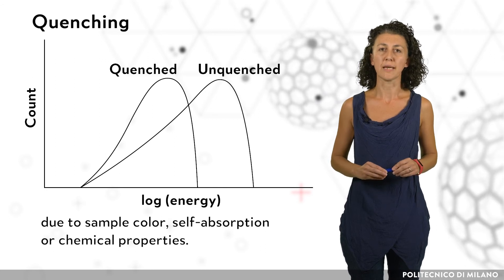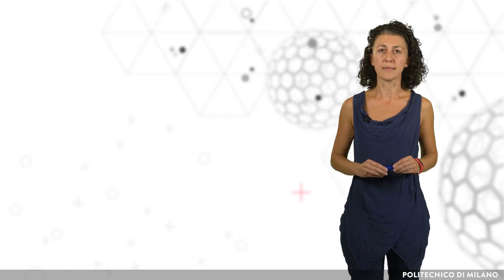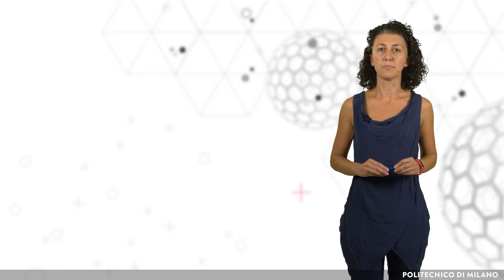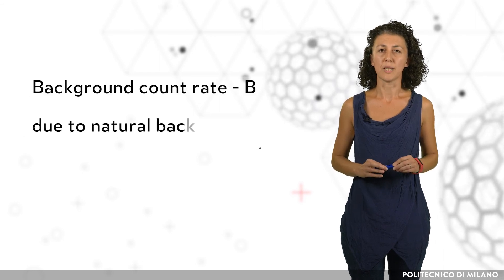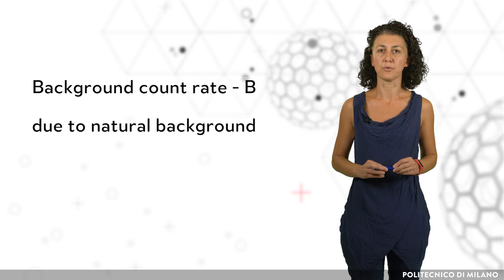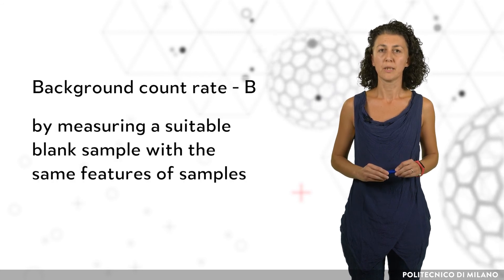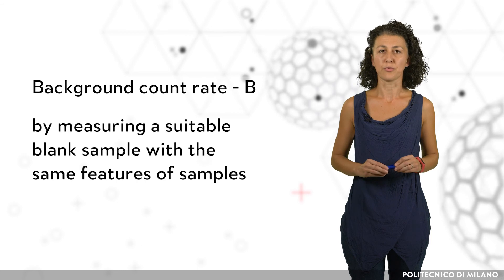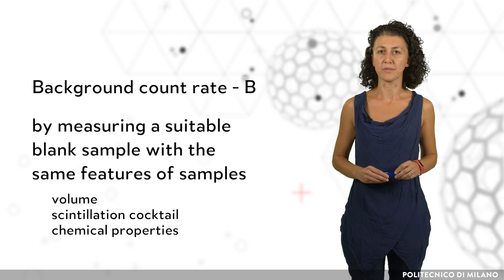To be able to evaluate an activity, which can be interpreted as mean activity, the background count rate due to natural radiation has to be determined by measuring a suitable blank sample. It has the same features of samples in terms of volume, scintillation cocktail, and chemical properties.